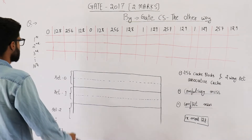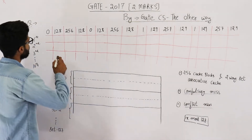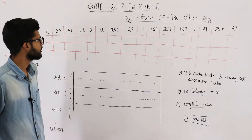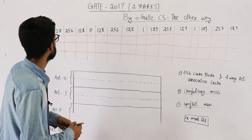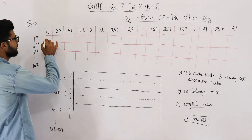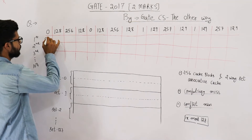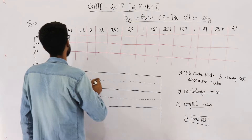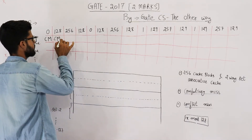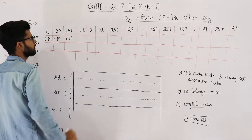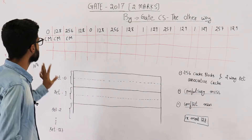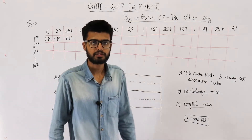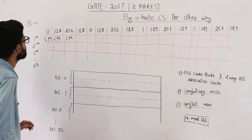Now let's start this question. Block 0, 128, and 256 are accessed for the first time here, so these three will be a miss — specifically a compulsory miss. Here also we have a compulsory miss, and here also a compulsory miss. These three are misses and they have to be brought into the cache. Let's see where they are going to be placed.